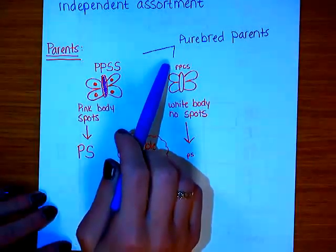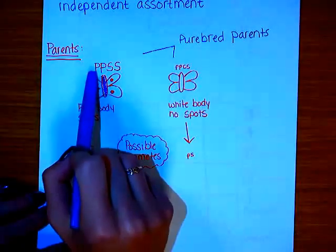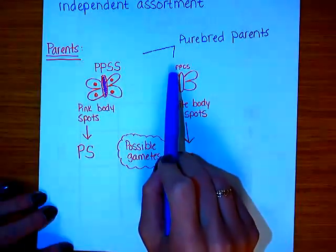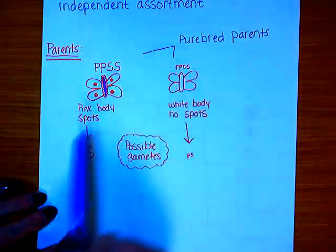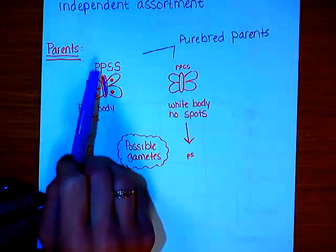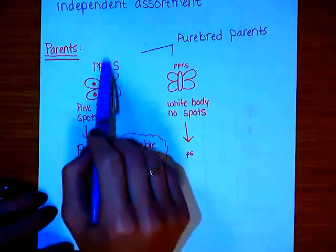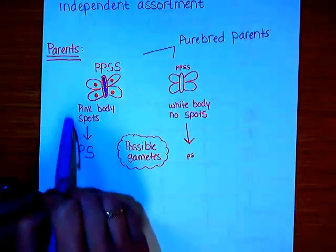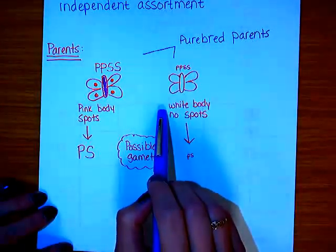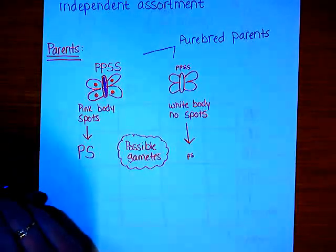Both of these parents are purebred, meaning that for both traits they are homozygous. One parent has big P, big P, big S, big S, and the other parent is little p, little p, little s, little s. The big P is the dominant trait representing a pink body, and big S is the dominant trait representing spots on the wings. Little p is the recessive trait representing a white body, and little s is the recessive trait representing no spots.